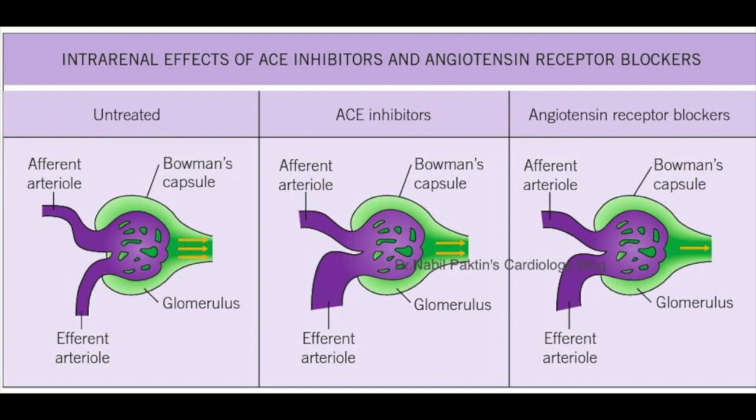The main reason this happens is that ACE inhibitors dilate the efferent arterioles in the glomeruli, which leads to a decrease in intraglomerular pressure. That is an expected and beneficial effect on the kidneys in the long term.